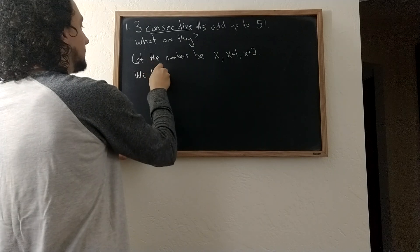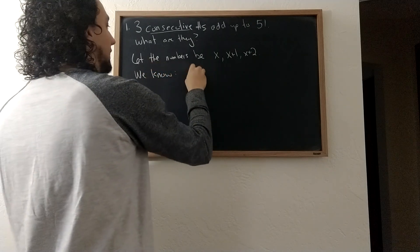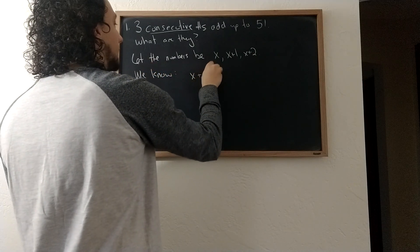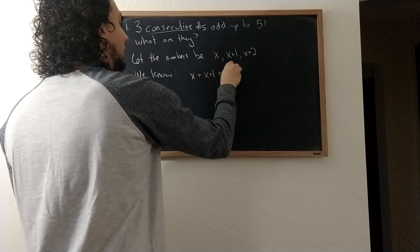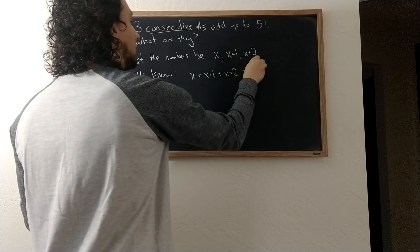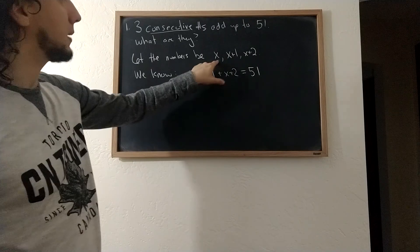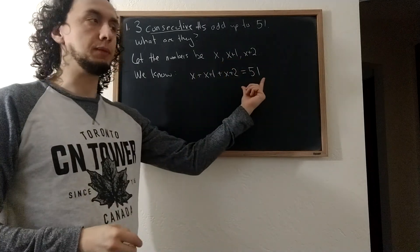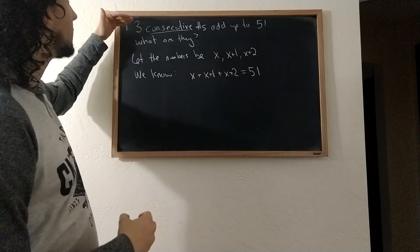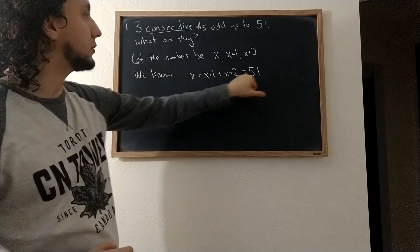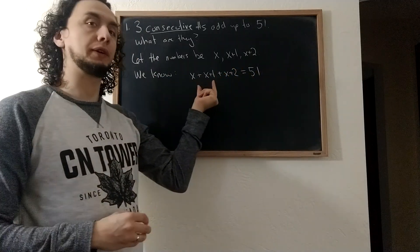And what we know is that x plus x plus one plus x plus two equals 51. I add up these three consecutive numbers I get to 51. So I've transformed this question from words into a single equation with a single variable.